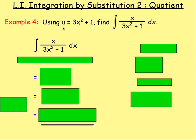We are now using the substitute u equals 3x squared plus 1 to find the integral of x over 3x squared plus 1. Just a quick recap: remember you use integration by substitution when the derivative of one part is linked to another part. You'll notice here if we differentiate 3x squared we will get 6x, and the x is already a part at the top, so we're using integration by substitution.